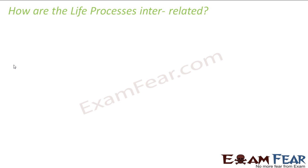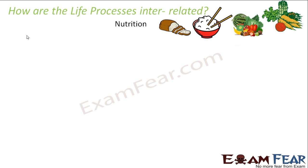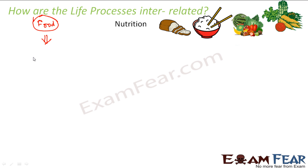Let us see the relation between the life processes. The first life process is nutrition. In nutrition, we talk all about food — how does an organism obtain food, how does it intake that food and take it inside the body, how the food is broken down into simpler molecules, digested, and absorbed by the body. So the question is: how is energy obtained from this food which we are talking about in nutrition?